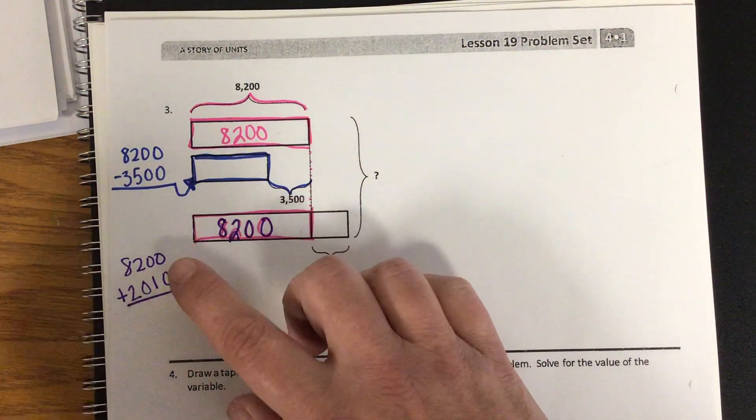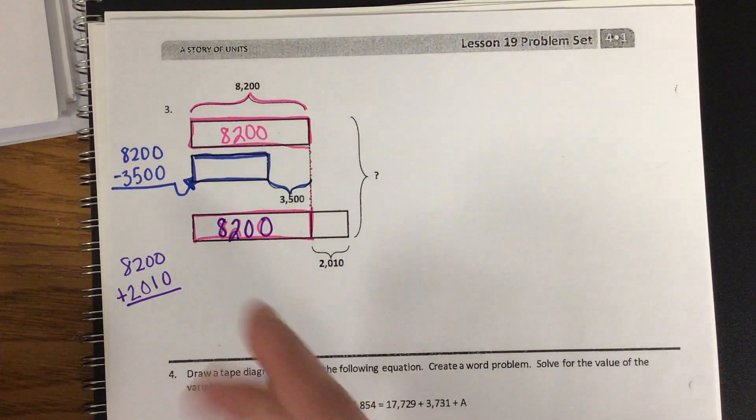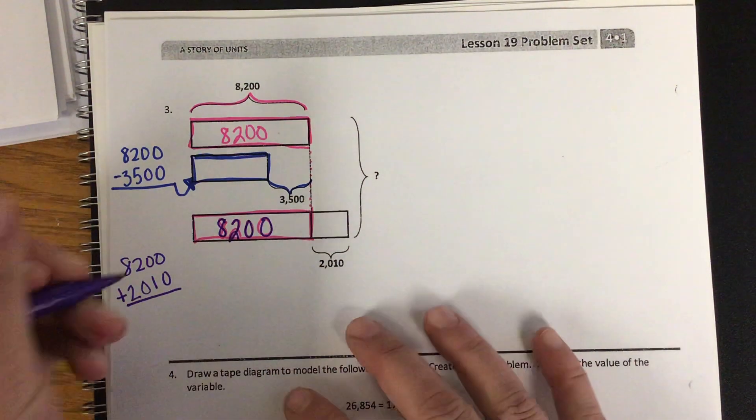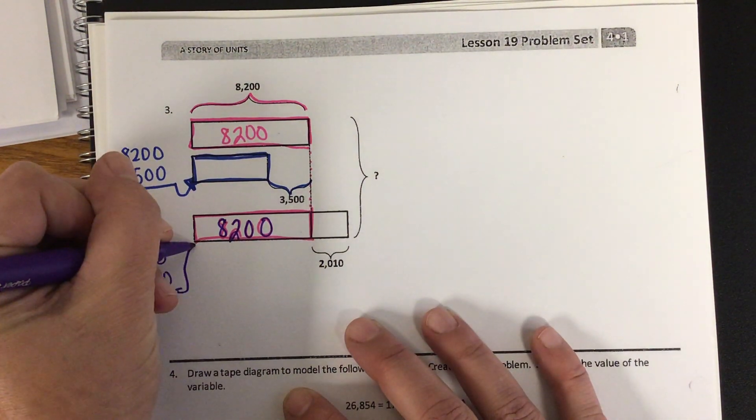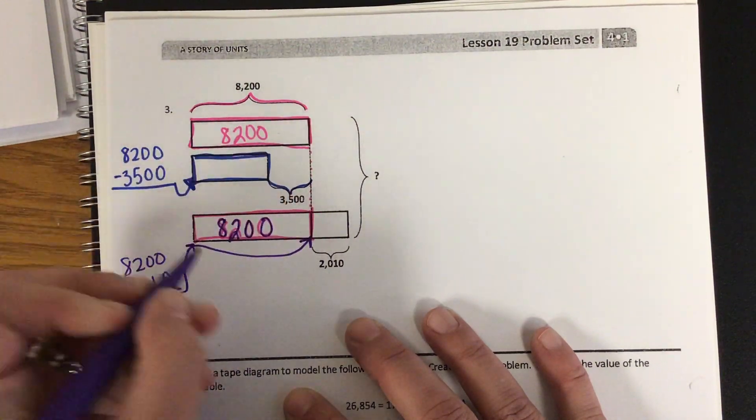Make sure those numbers are lined up correctly. The 0s need to be in the 1s column. The 0 and the 1 need to be in the 10s column. And when you find that sum, that will be this and this.